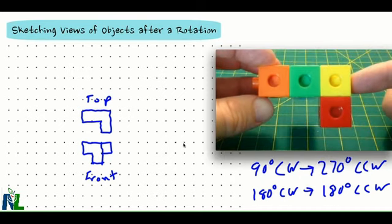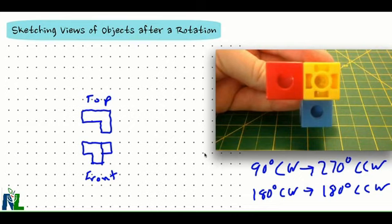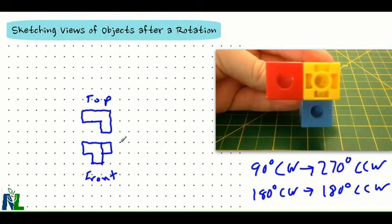Now I'll have a look at my right view. I can see I got my red and my yellow cube there, and my blue cube underneath. That's the outline. The blue cube - there's a little change in depth there, so I'll draw that in. This is my right view.